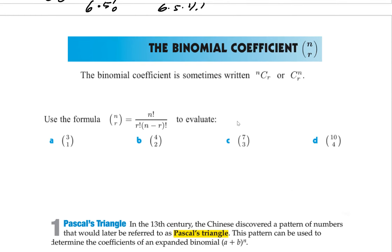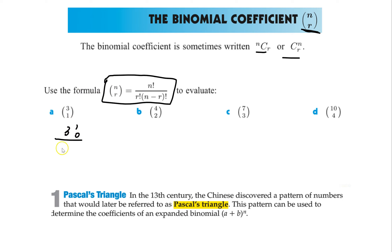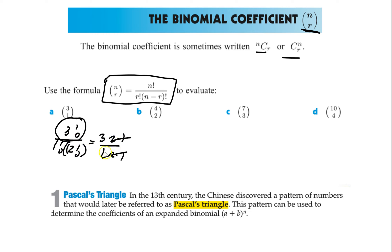That's why factorials matter — that's how we simplify the binomial coefficient. If you see n-choose-r, written as C(n,r), the formula is n! divided by (r! times (n−r)!). For example, C(3,1) = 3! / (1! × 2!) = (3×2×1) / (1 × 2×1). The 2×1 cancels, leaving 3/1 = 3.